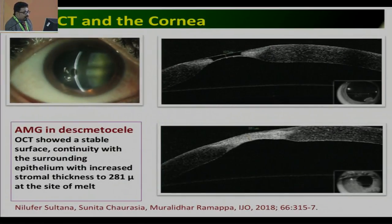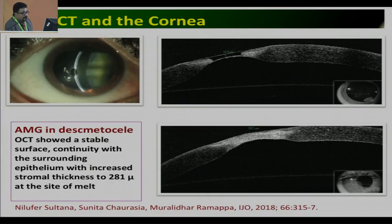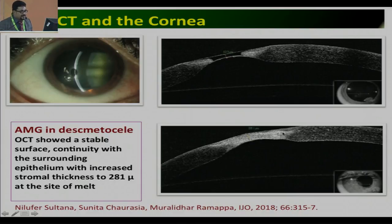Another case: this patient had Descemet's membrane involvement following corneal melt in a case of dry eye. Amniotic membrane grafting was done. At the initial visit and after amniotic membrane grafting, this patient improved.